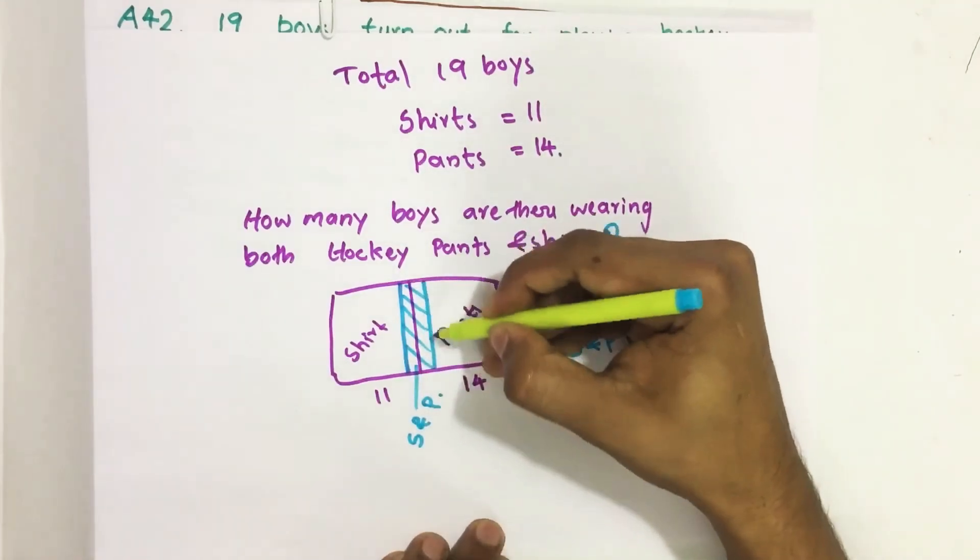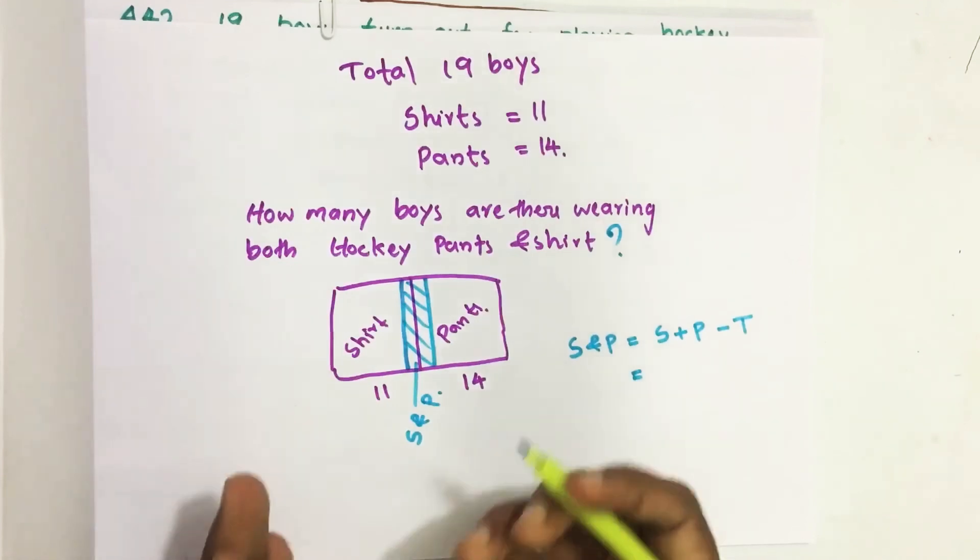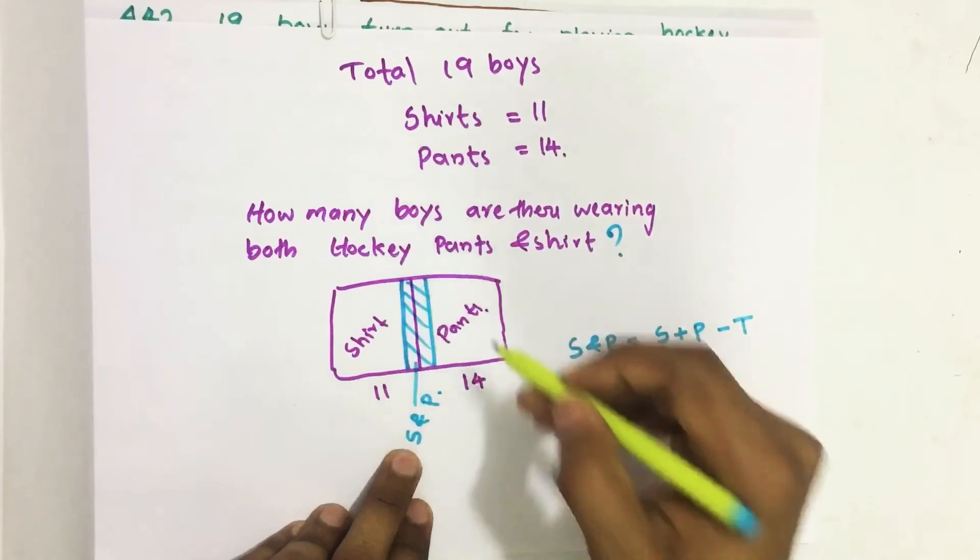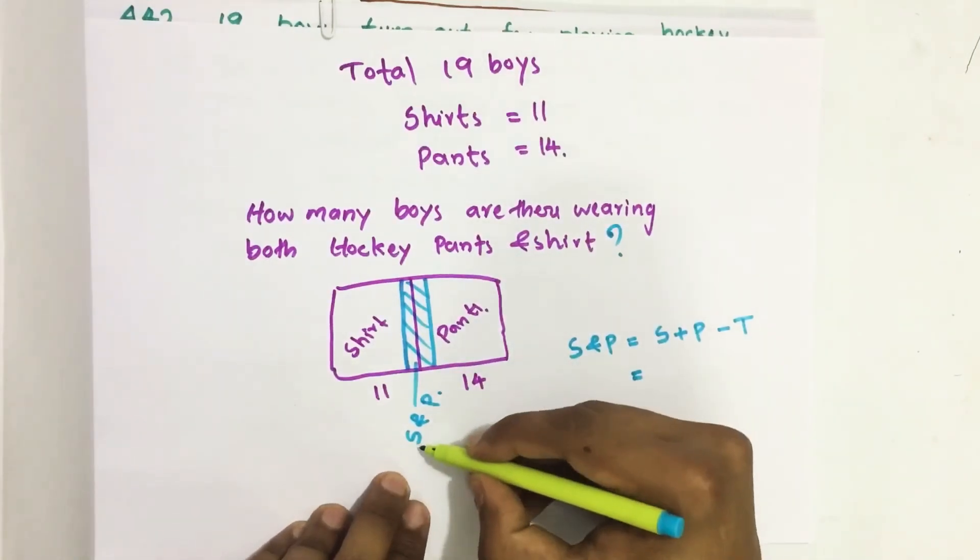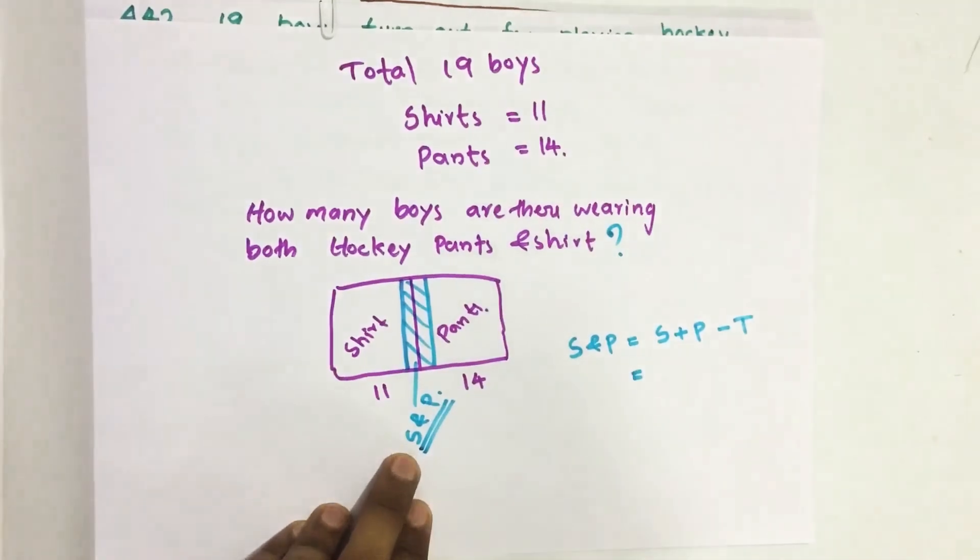And this common area, this blue color area, indicating boys who wore both hockey shirt and hockey pants, and I indicated this with S and P. S means shirt, P means pants.